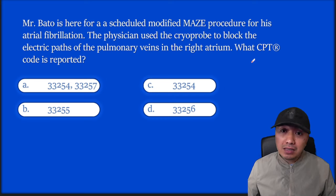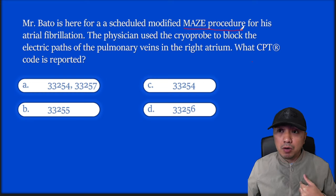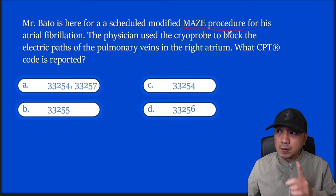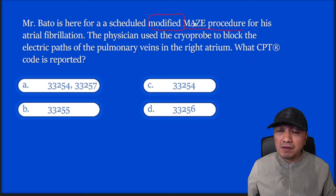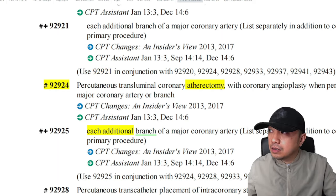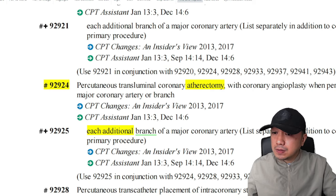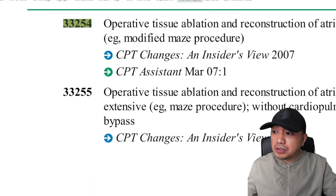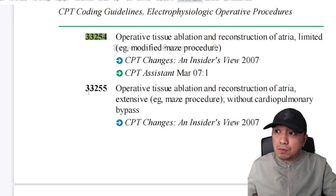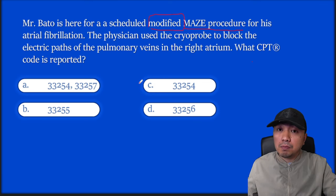For this question, take note if the term 'maze procedure' is mentioned — it's more of treatment for the rhythmic problem of the heart, related to electrical conductivity. The doctor will do ablation of the tissues of the heart. What the doctor has done is the technique called modified maze. It's easy to code, but it's a complex procedure. Go to your codes and search modified maze. Your 33254 is operative tissue ablation — modified maze is mentioned there.